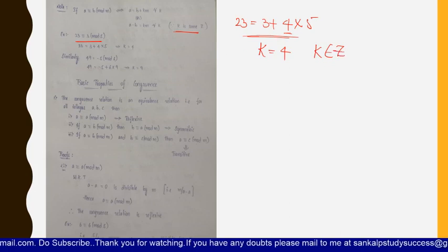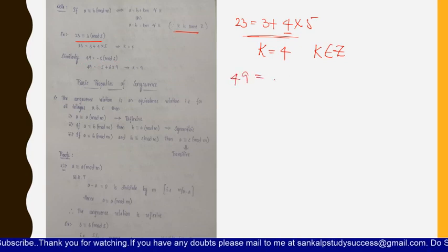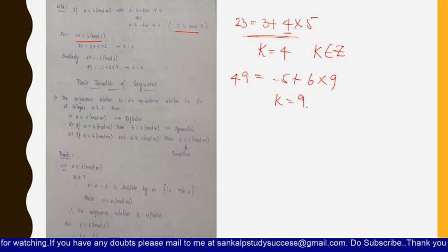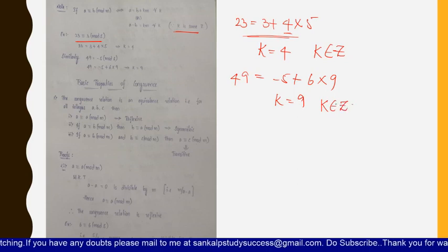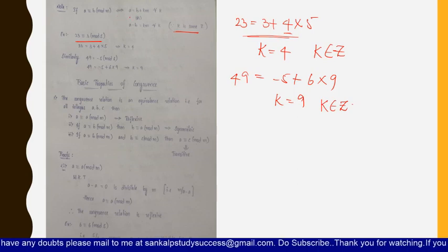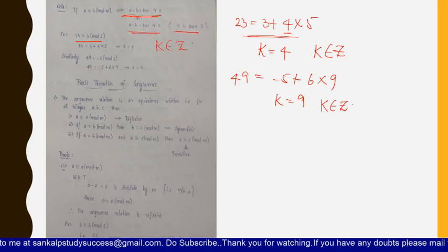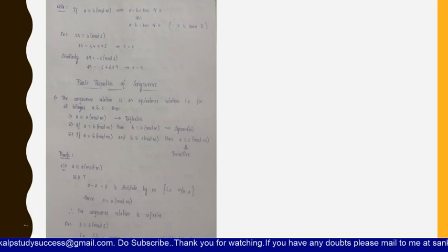Similarly, 49 ≡ −5 (mod 6) can be written as 49 = −5 + 6×9, because 6×9 = 54 and 54 − 5 = 49. So the value of k is 9, which is also an integer. In general, if a ≡ b (mod m), then a = b + km, or equivalently a − b = km, where k belongs to the integers.